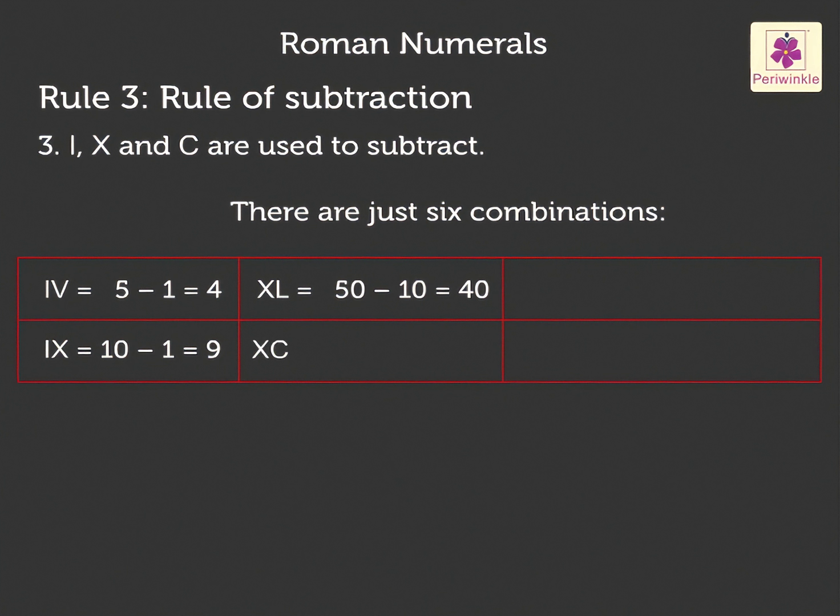XC is equal to 100 minus 10 is equal to 90. CD is equal to 500 minus 100 is equal to 400. CM is equal to 1000 minus 100 is equal to 900.